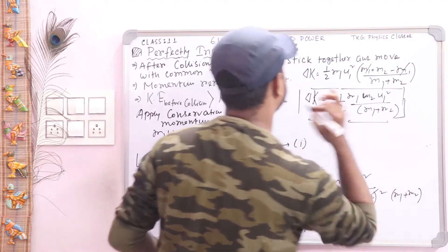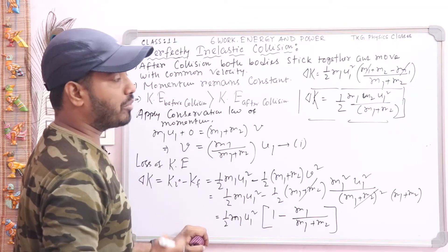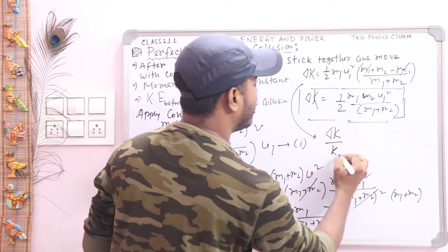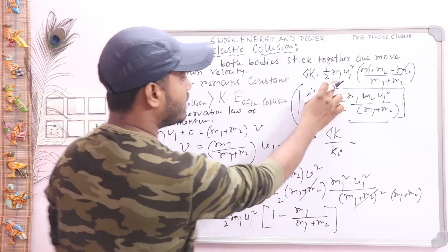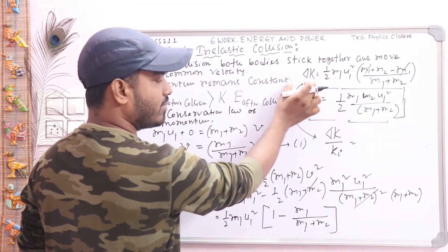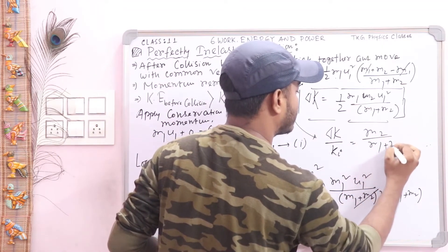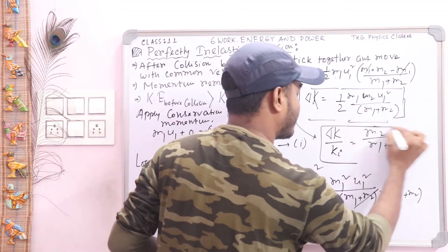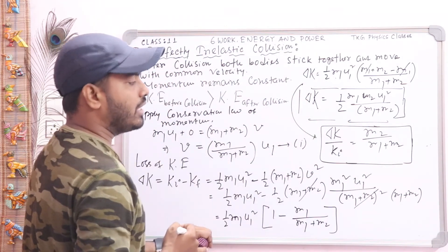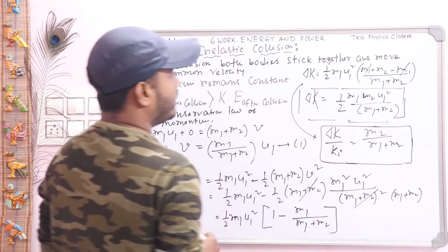You can also find the fractional change of kinetic energy. Since K_initial = ½·m1·u1², dividing ΔK by K_initial gives: ΔK/K_initial = m2/(m1 + m2). This is an important result — the fractional loss of kinetic energy in perfectly inelastic collision is m2/(m1 + m2).